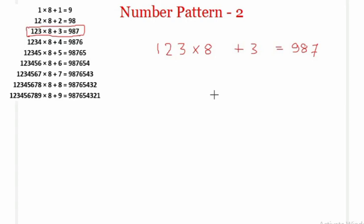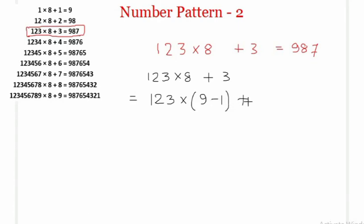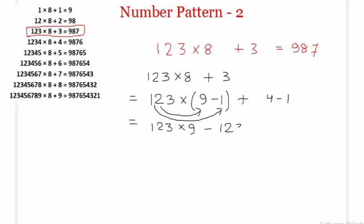To find the value of 123 × 8 + 3, we can write 8 as (9 − 1), and note that 3 is the same as (4 − 1). So the expression becomes 123 × (9 − 1) + (4 − 1). Applying the distributive law, this expands to 123 × 9 − 123 × 1 + 4 − 1, which equals 123 × 9 − 123 + 4 − 1.